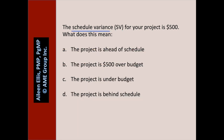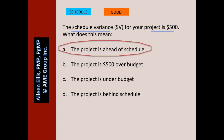The schedule variance for your project is $500. What does this mean? Is it about schedule or cost? It's about schedule. $500 — is that good or bad? That's good. A: the project is ahead of schedule — that sounds great. B: the project is $500 over budget — we don't know. C: the project is under budget — we don't know. D: the project is behind schedule — that's false. We have a positive schedule variance, meaning the project is ahead of schedule.